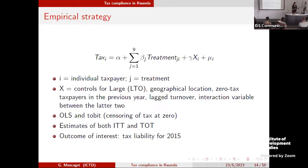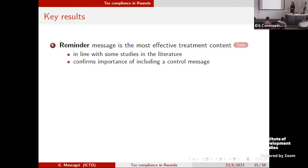Our empirical framework uses nine beta coefficients for the nine treatments, controlling for relevant variables, estimated with both OLS and Tobit given the censored nature of the tax variable, and we estimated both intention-to-treat and treatment-on-the-treated. I won't go into those details today since I'm not showing tables — I want to go straight to the main results.